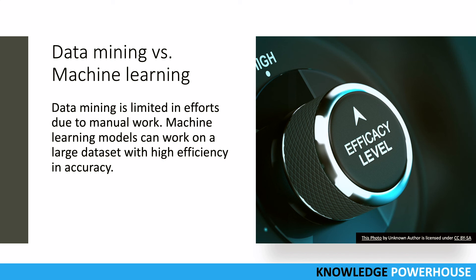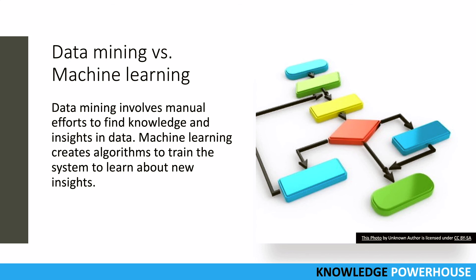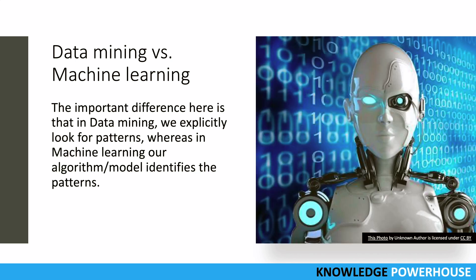So that's why it's quite a good trend nowadays to go for machine learning to study data instead of data mining. To recap: first, data mining has limitations due to manual work; second, data mining involves manual work whereas machine learning is automated; and third, data mining needs explicit programming while machine learning uses implicit programming — you create a model and the model learns.